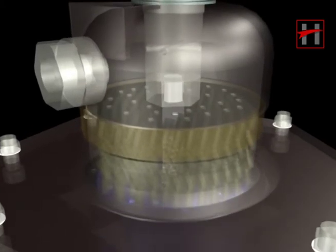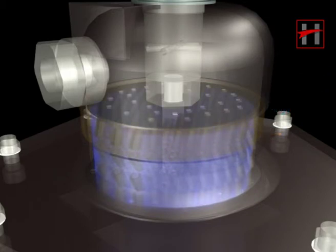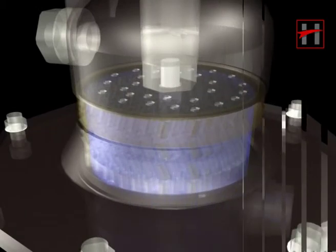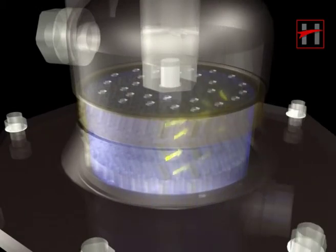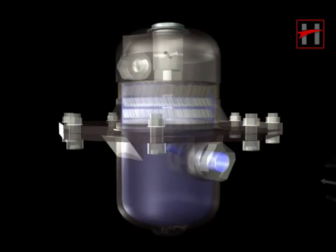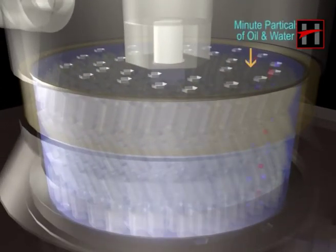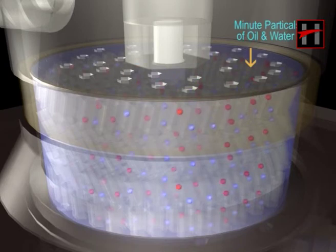The compressed air is carried through the Raschig ring filling, being repeatedly deflected and swirled. The air deposits minute particles of oil and water on the Raschig rings.